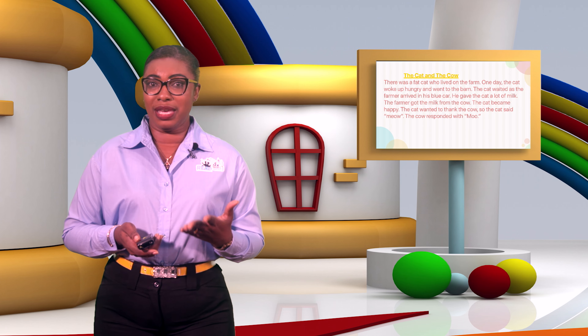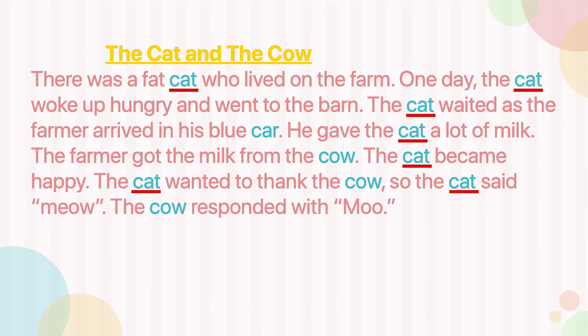Now, back to our fancy letter for today — C. Did you find any words that begin with letter C? Let's see what you found. Did you find the word 'cat'? Great job! What about 'car'? And there was also 'cow.' The more you see these words, the more you learn them. 'Cat' is spelled C-A-T. 'Car' is spelled C-A-R. And 'cow' is spelled C-O-W. There you had it — our story, 'The Cat and the Cow.'